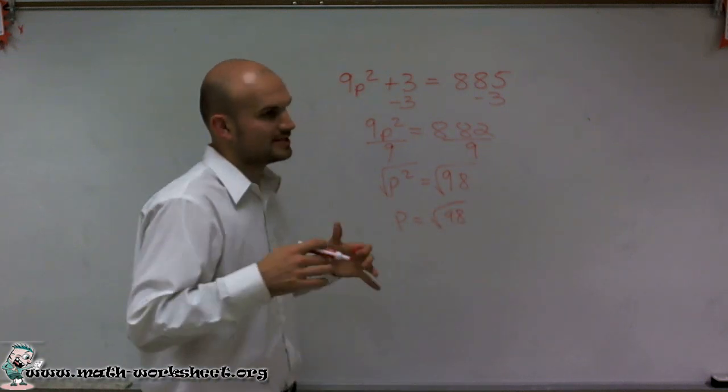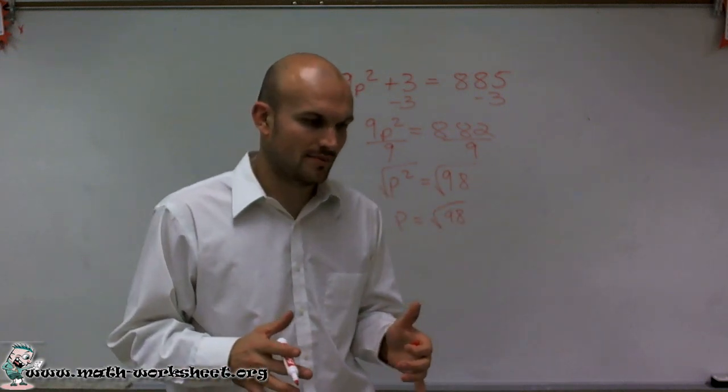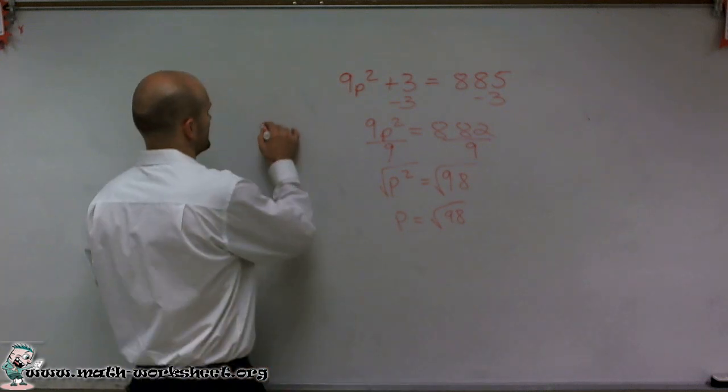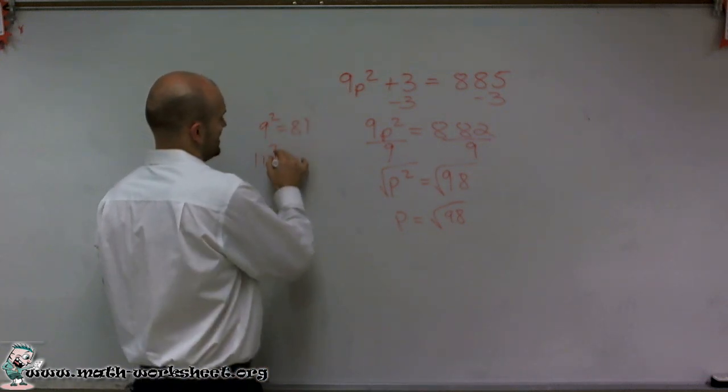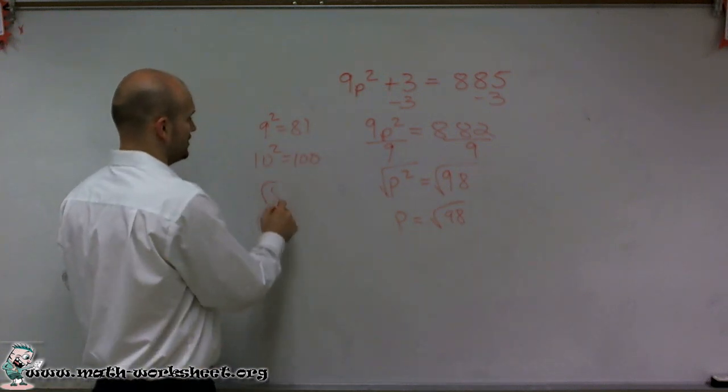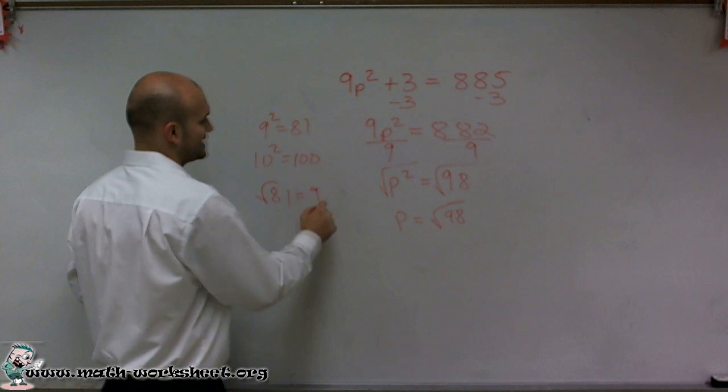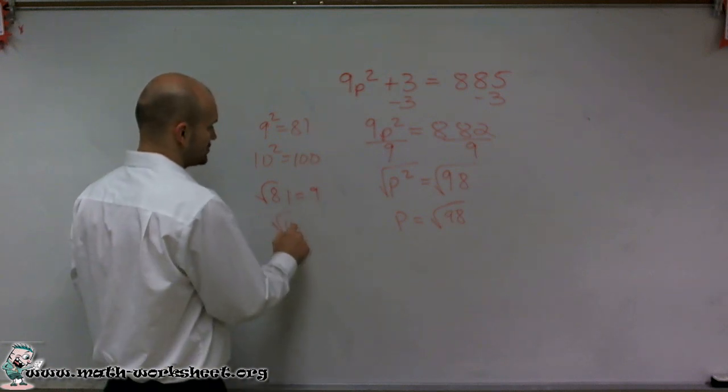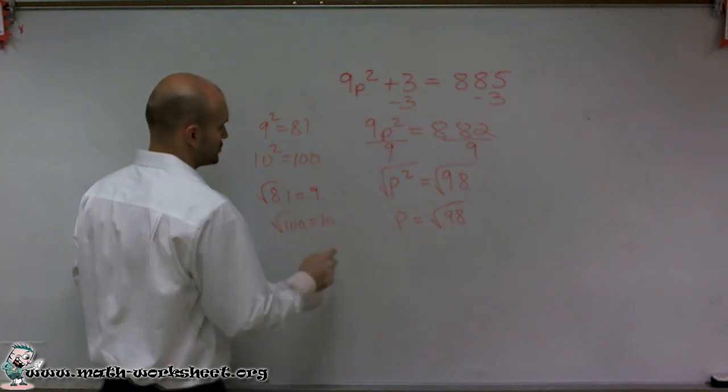Now it's important for us to understand square numbers. One thing we know is 9 squared equals 81, and 10 squared equals 100. So when I take the square root of 81, we know that the answer is going to be an integer 9. And the square root of 100 is going to be the integer 10.